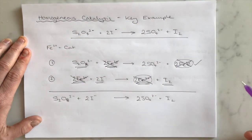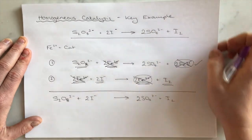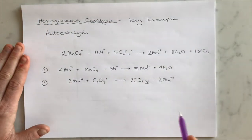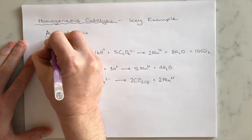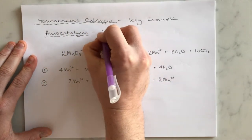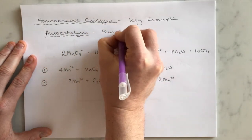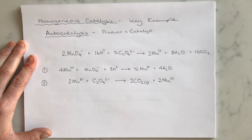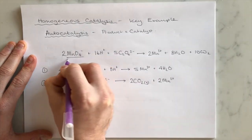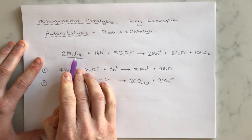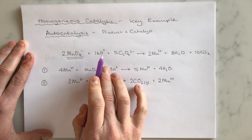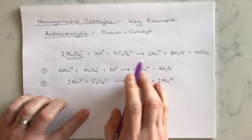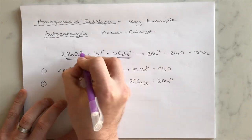That's one key example of homogeneous catalysis that you need to learn. The second reaction is a special case known as autocatalysis, where the product of the reaction is the catalyst. In this reaction, we carry out a reaction between manganate ions — a bright purple solution — with H⁺ ions and ethanedioate ions (C₂O₄²⁻). Again, it's the same situation: both the manganate and ethanedioate ions are negative, so they won't collide willingly.